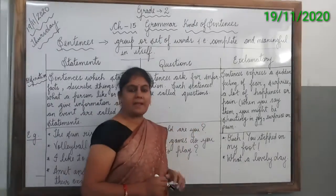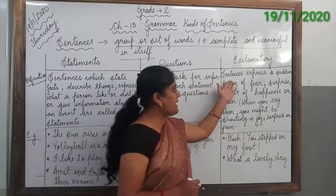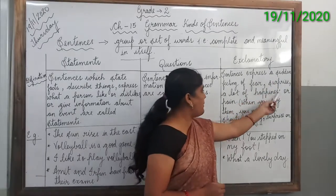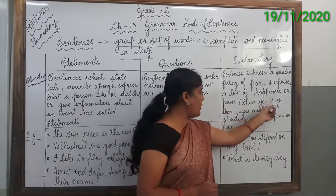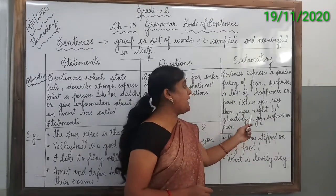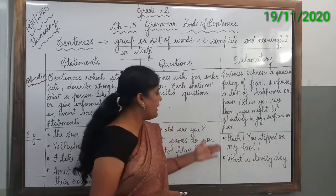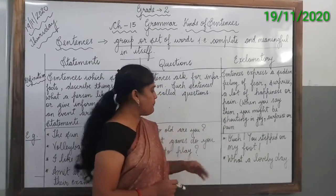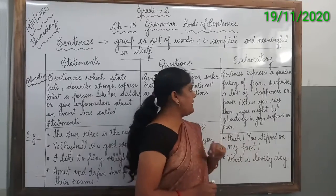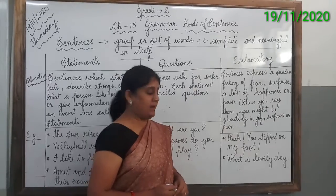The third kind is exclamatory sentences. Sentences which express a certain feeling of fear, surprise, a lot of happiness, or pain are called exclamatory sentences. When you say them, you might be shouting in joy, surprise, or pain. For example: 'Ouch! You stepped on my feet.' — this sentence expresses pain.